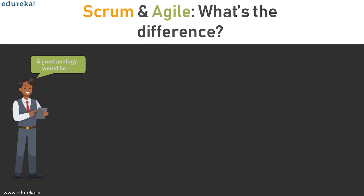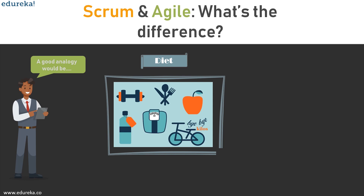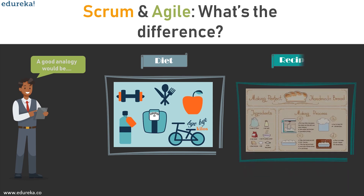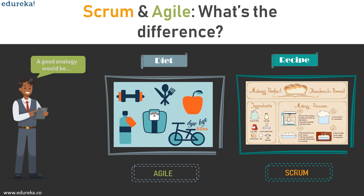The difference between Scrum and Agile would be like the difference between a recipe and a diet. A diet is a set of methods and practices based on principles and values, whereas a recipe is a framework you can use to implement your vegetarian diet. This is similar to the relation between Agile and Scrum, where Agile is the diet and Scrum is the recipe you follow while implementing the diet.